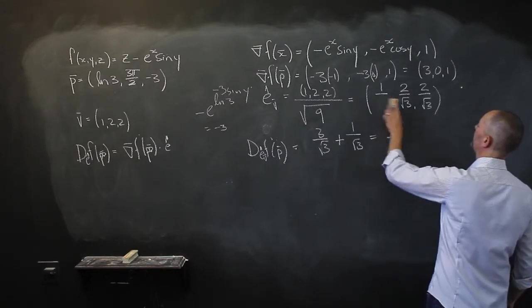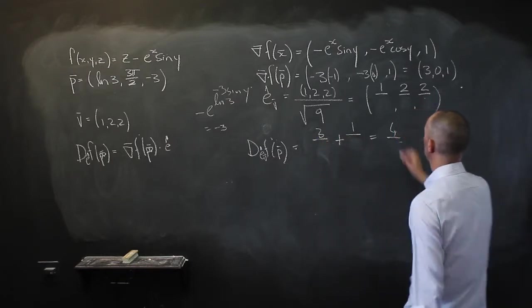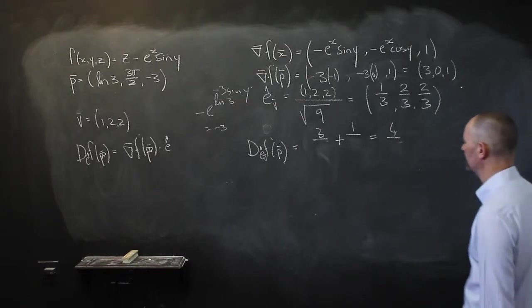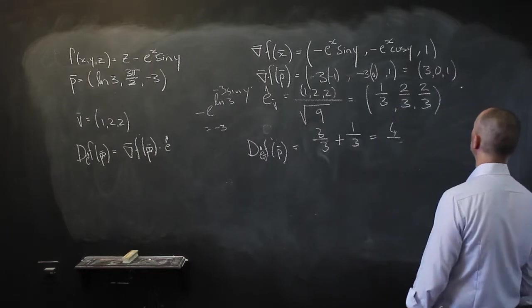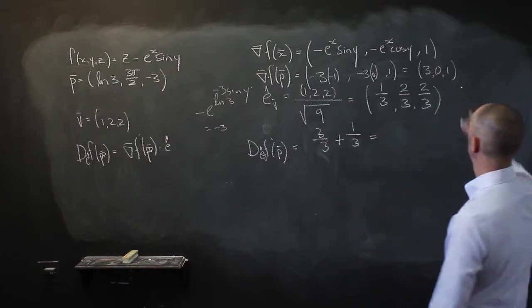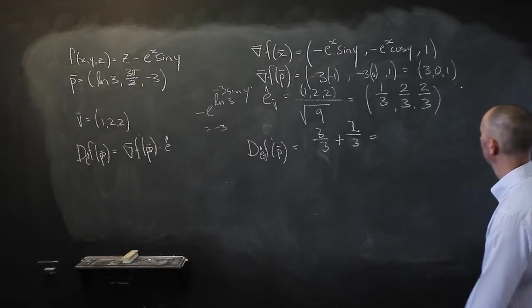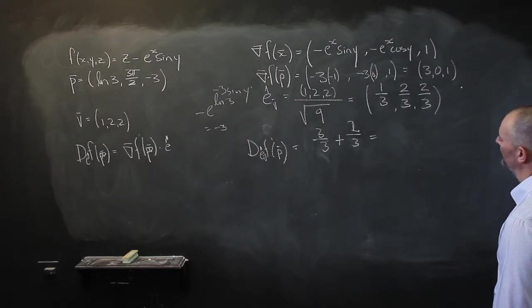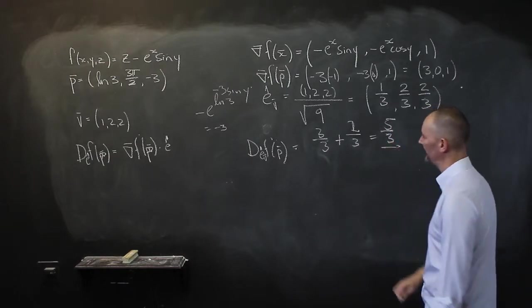The square root of 9 is 3. So the components are 1/3, 1/3, 1/3. That gives 3 times 1/3 = 1, plus 0, plus 1 times 2/3. So that's 1 plus 2/3 — lots of arithmetic mistakes there — and that equals 5/3. Do it for yourself: the answer is 5/3.